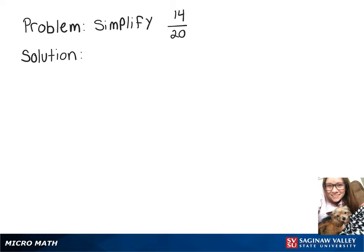We want to simplify 14 over 20. We can rewrite 14 over 20 using a common factor between the two. So we can rewrite 14 as 2 times 7, and 20 as 2 times 10.